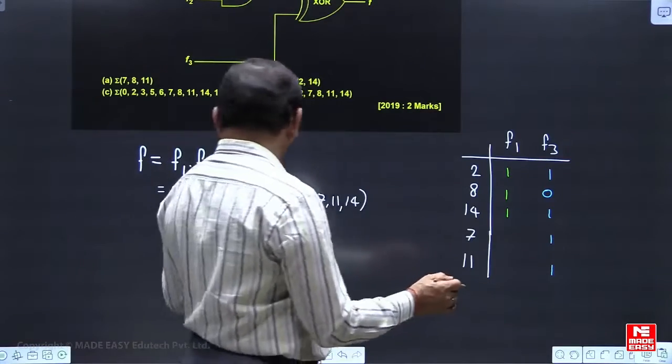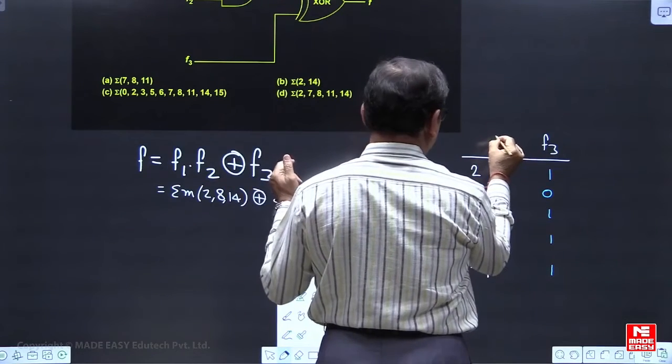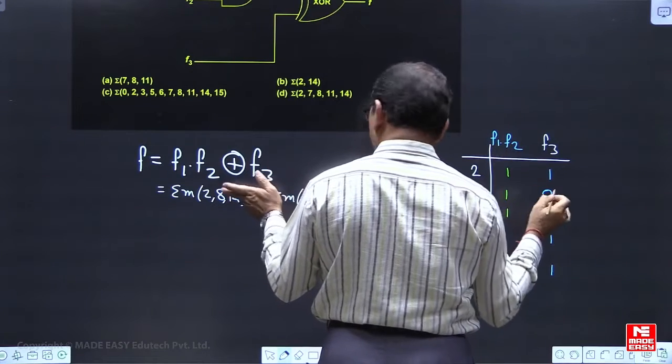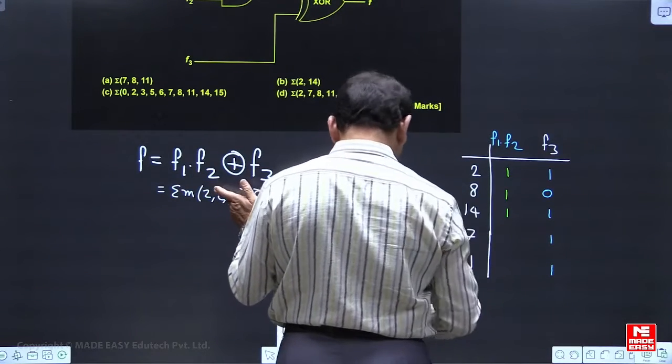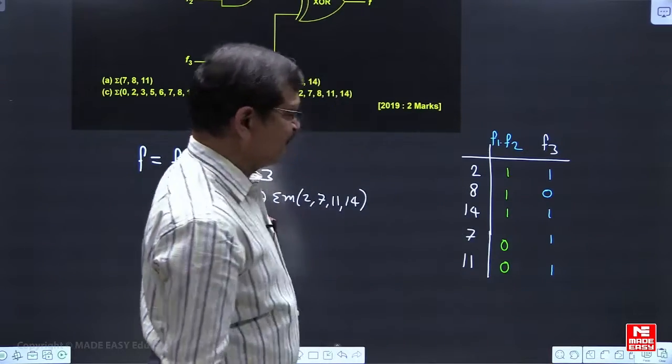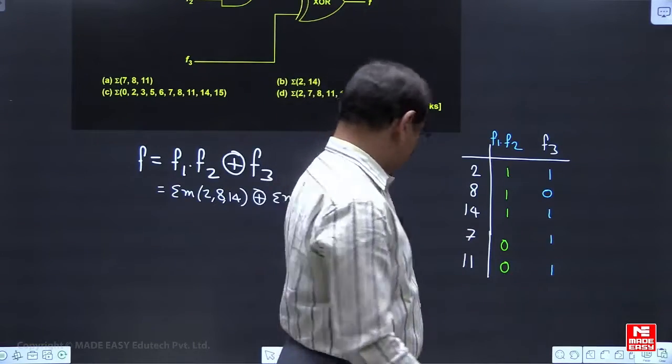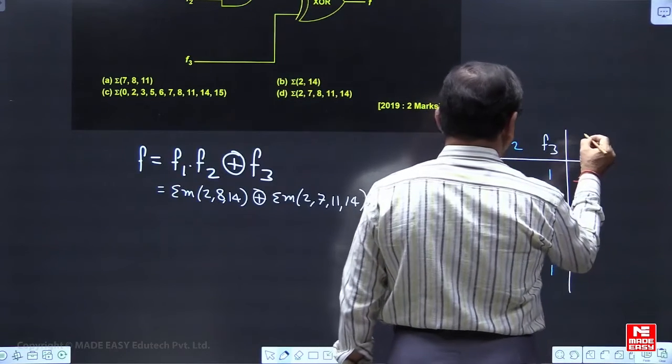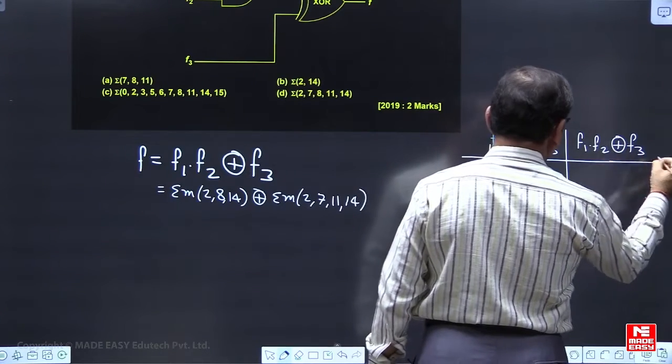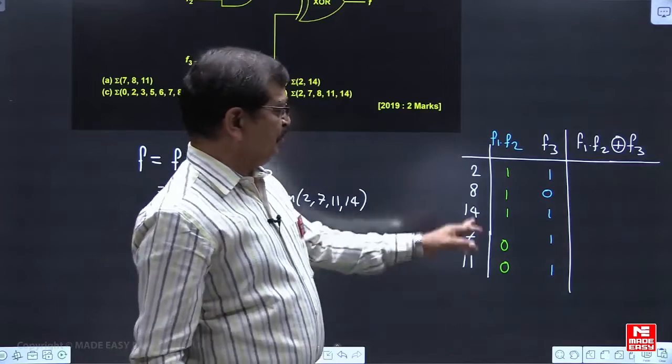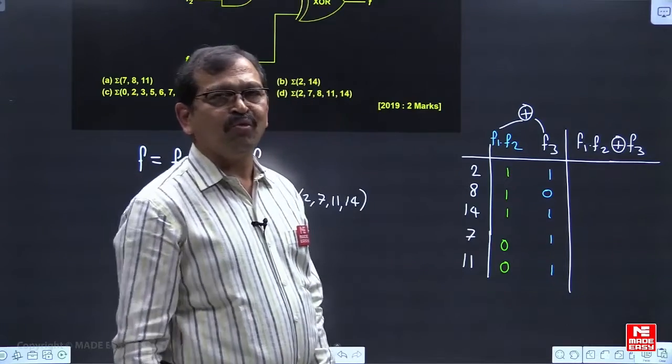And 7 ka value in f1 AND with f2, this 7 and 11 ka value f1 AND with f2 mein kya hai? It is having the value as 0. 7 is not here. And 11 is not here. Means they are the maxterms with the value of 0. Now, we are taking here exclusive OR between this f1 AND f2 with f3. We are having f1 AND with f2, exclusive OR with f3. So basically, these two functions ke beech mein aapko exclusive OR hai hai. So exclusive OR truth table to aapko malum hai.